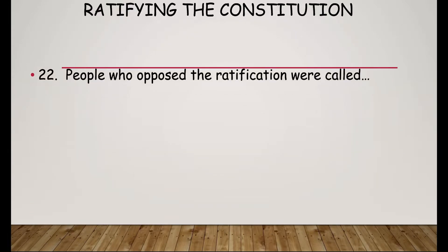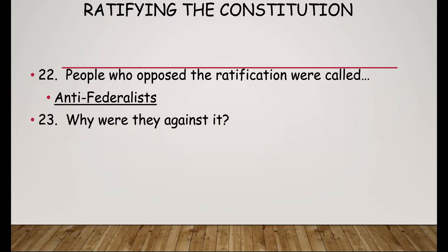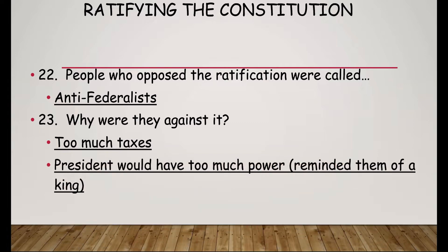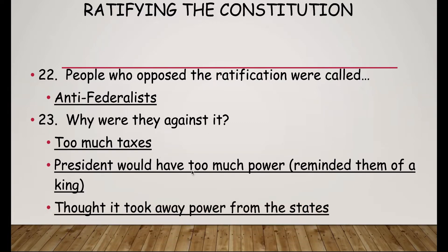On the flip side, you had people that were against it, called Anti-Federalists, and they had different reasons. They argued that with the Constitution we're going to pay too many taxes — taxes was a big theme to these people. They also argued that the president would have too much power, reminding them of a king, in particular King George. And they argued that it took away power from the states. In the end, the states agreed to support the Constitution, and it went into effect.